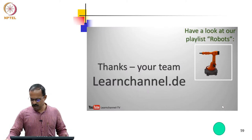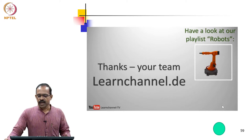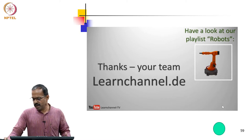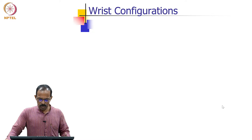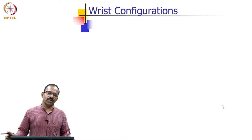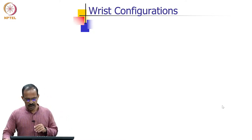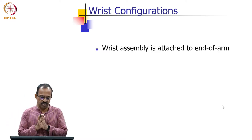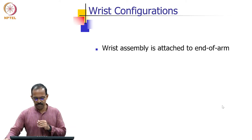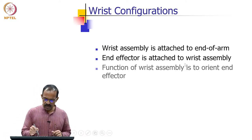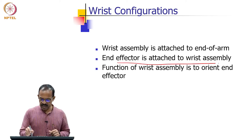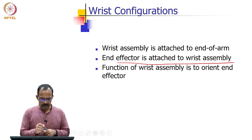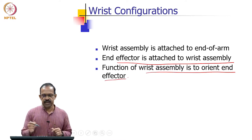That covers the three important robots used in industry. The body and arm configurations of the jointed arm, Cartesian, and SCARA are used for positioning the wrist in 3D space. If you look at the wrist configurations, there can be different wrist assemblies attached to the end of the arm, and the end effector is attached to the wrist assembly. The function of the wrist assembly is to orient the end effector.